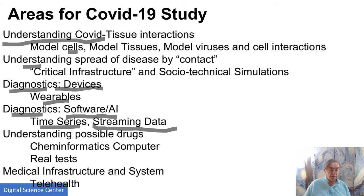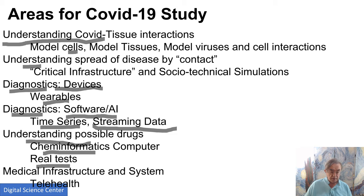Then we have to look at some of the things we did in the last lesson: understanding possible drugs. This was originally called cheminformatics, and now it's being done by computer studies, and we can also do real tests. The cheminformatics is becoming these deep learning networks. Previously, when I used to work on it maybe ten years ago, deep learning didn't exist and the field was a little bit of a struggle.